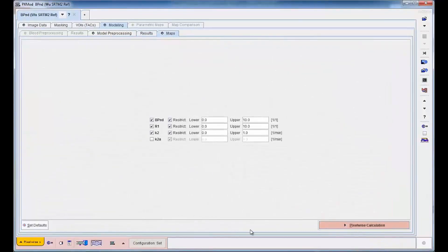At this stage in the process, the parameters of interest for the mapping are configured. In our example, the BPND parameter is the main outcome, and it is restricted to values between 0 and 10.